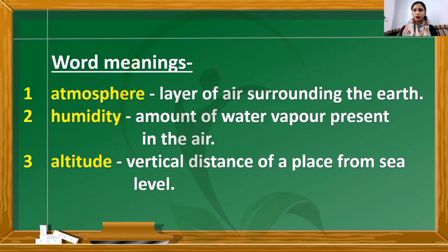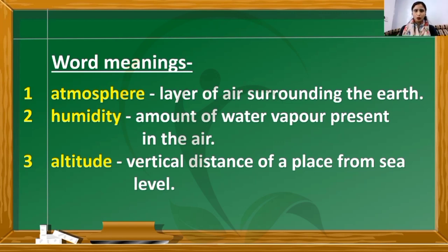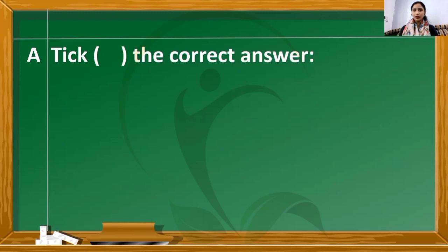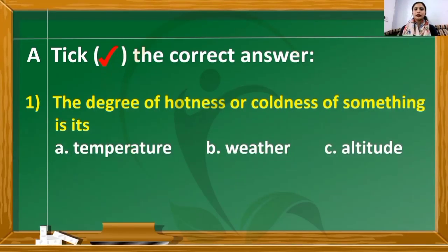Now let us move to the question and answers from your splash. Those who have their splash can solve it there and write answers in the notebook; those who don't have the splash write everything in the notebook. The first question — pick the correct answer: the degree of hotness or coldness of something is? The correct answer is temperature.